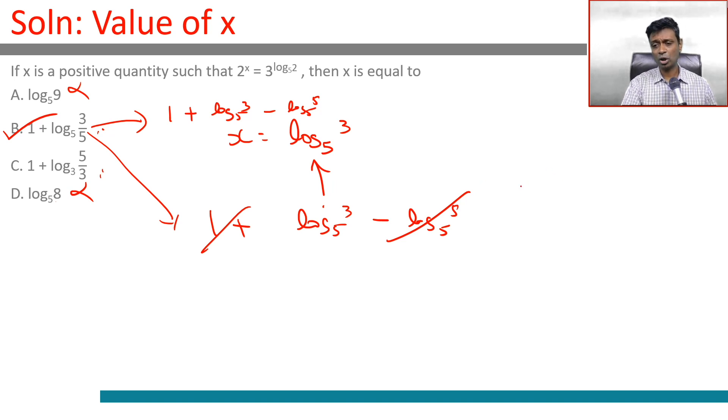Key point: whenever you're given log and exponents, it helps to simplify by taking log on both sides. Once you've taken log on both sides, choose a suitable base, find the right base in order to be able to simplify that.